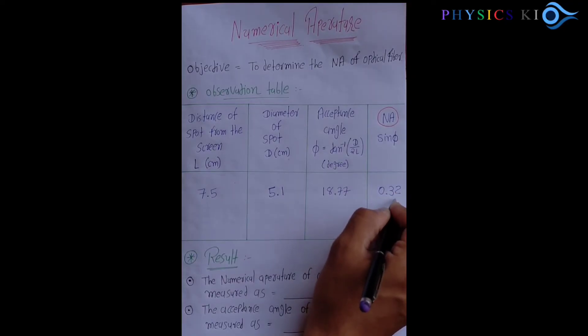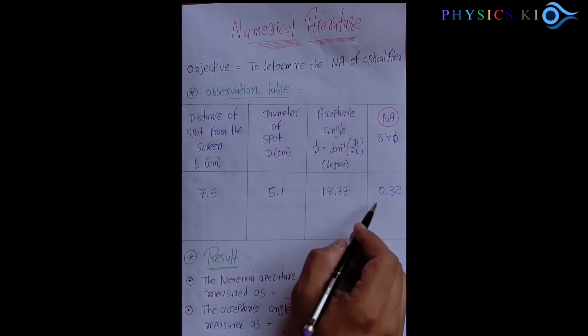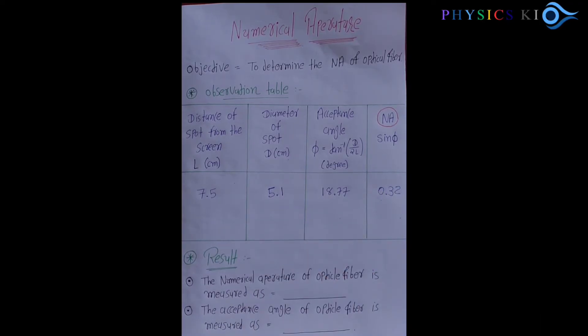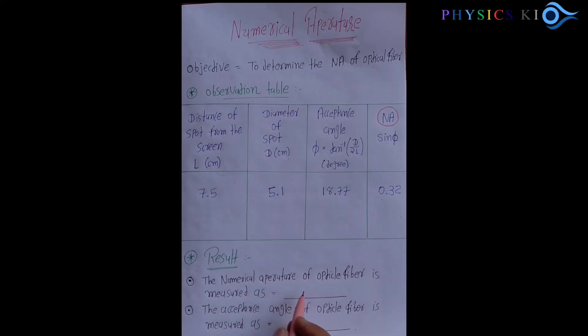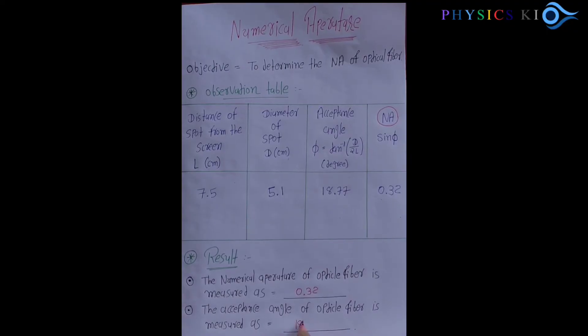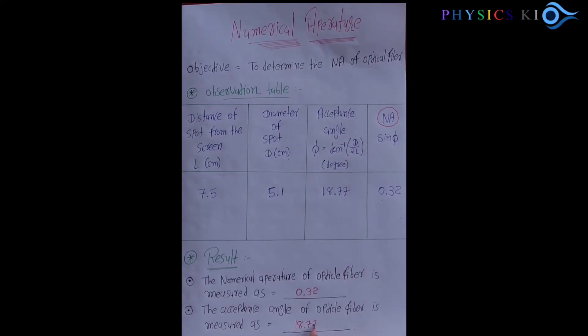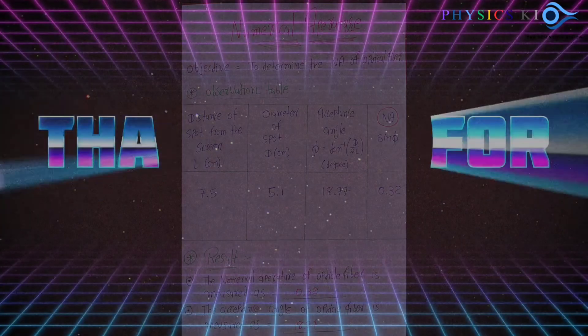This is the numerical aperture of this optical fiber cable, which shows the light collecting ability. The numerical aperture we got is 0.32 and the acceptance angle is 18.77 degrees. Simple experiment, thank you.